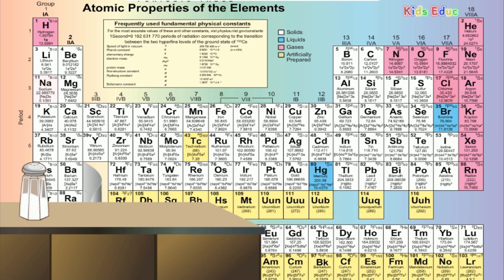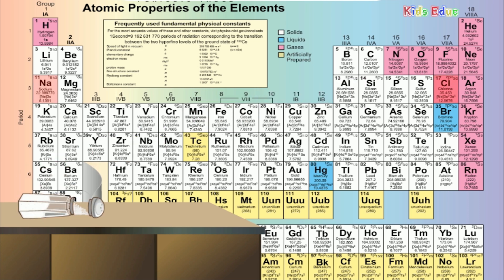Let's find sodium and chlorine on the periodic table. First, I'll click and drag the one sodium element from the periodic table and drop it in the salt shaker. Next, I'll get one chlorine element and drop it in the salt shaker. Excellent! Combining one sodium atom with one chlorine atom creates salt.